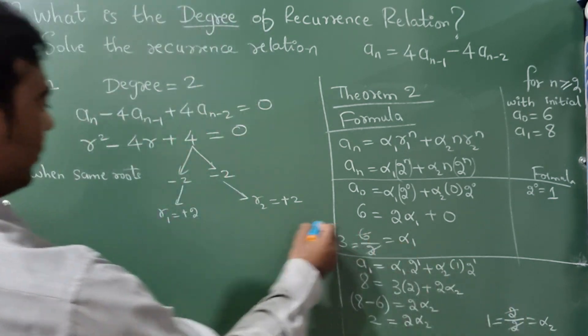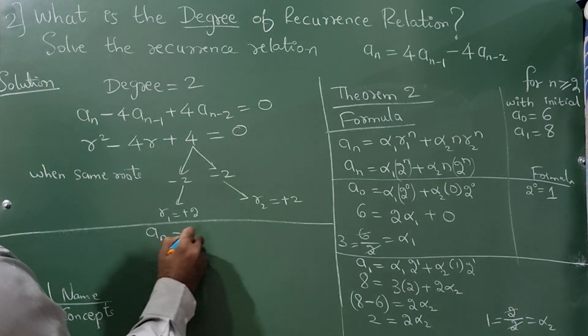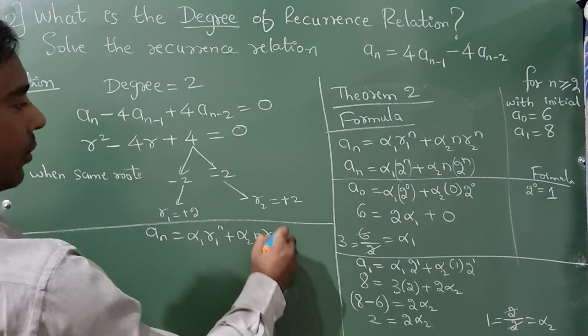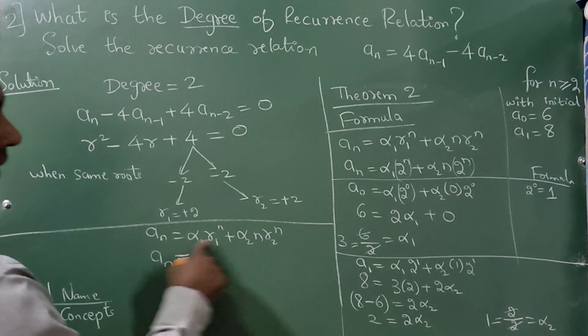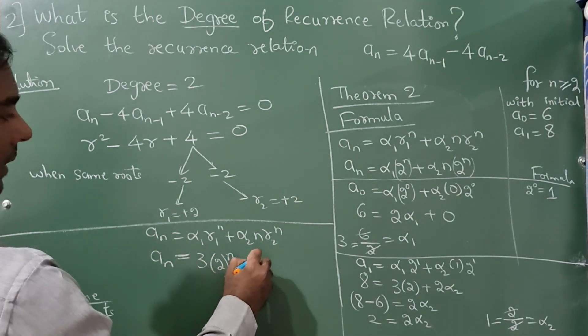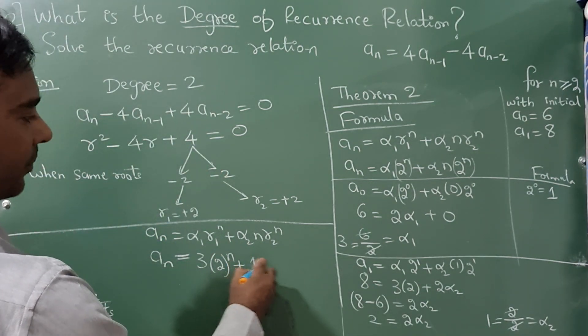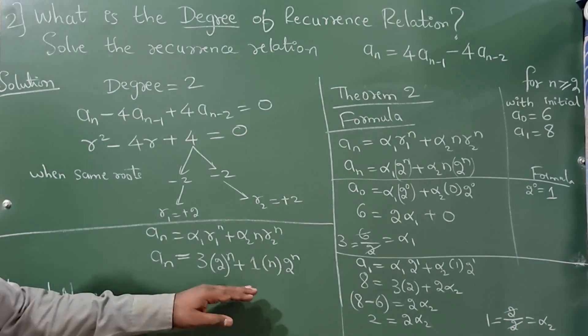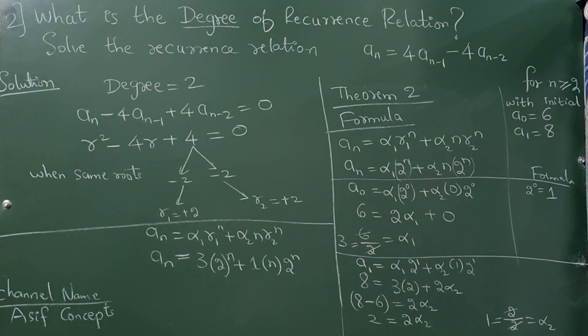So we have got α₂ and α₁ value. I'll write this formula once again here: aₙ = α₁r₁ⁿ + α₂nr₂ⁿ. What is α₁ value? 3. r₁ value is 2. α₂ value is 1, and r₂ value is 2. So aₙ = 3(2)ⁿ + n(2)ⁿ. This completes your answer.